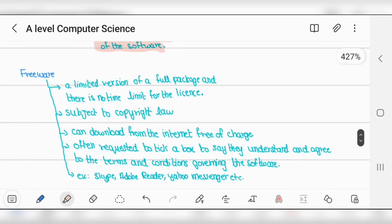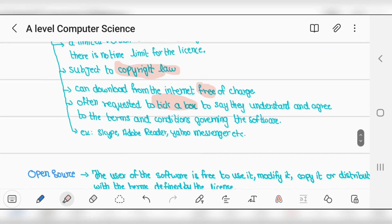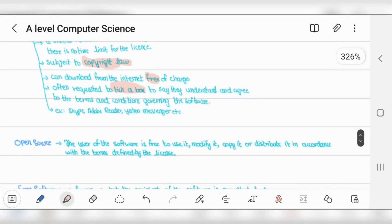Freeware is a limited version of a full package with no time limit, subject to copyright law. Can download from the internet free of charge, often requiring ticking a box agreeing to terms and conditions to safeguard copyright laws. Examples include Skype, Yahoo Messenger, and many apps on Google Play Store.